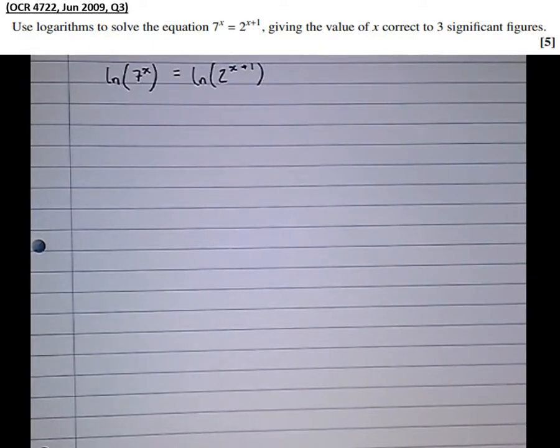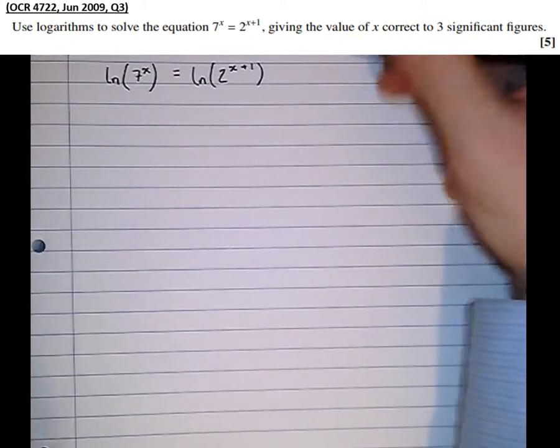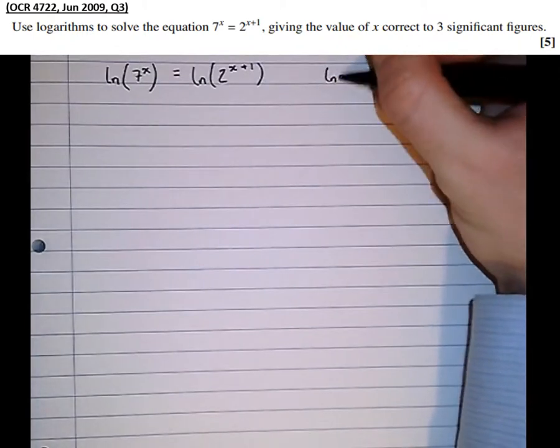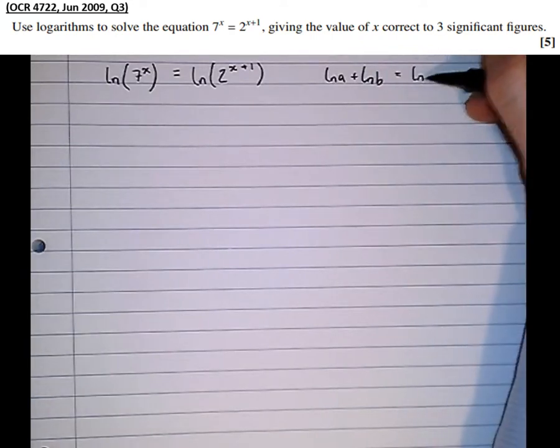Now I'm going to have to use the log rules to try and simplify that. I always find it helps each time to write down all the log rules. So we've got log a plus log b equals log of ab.